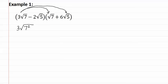Next, let's do the outers. We have three times six, which gives us eighteen, and square root of seven times square root of five, which gives us square root of thirty-five. We multiply these together as seven and five are already both prime numbers and there are not two of either of them.